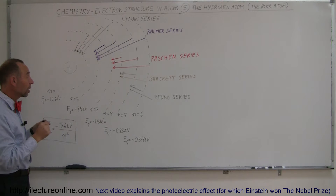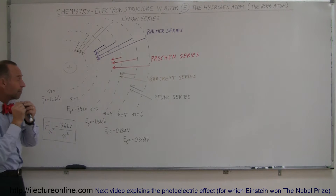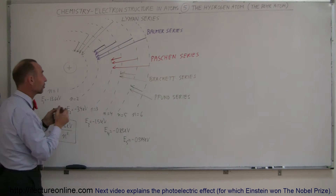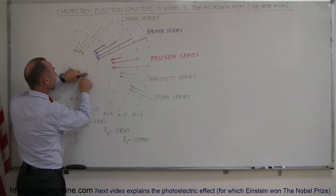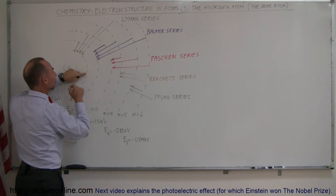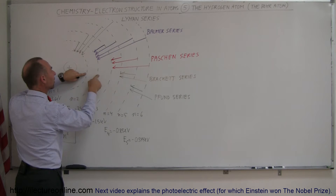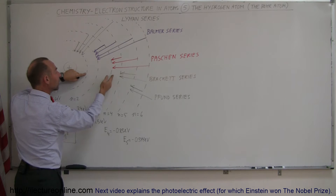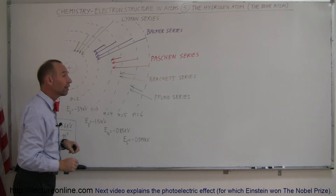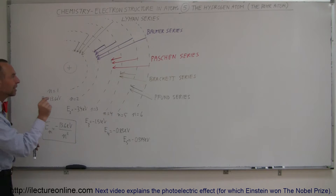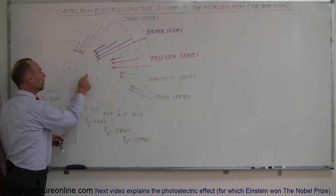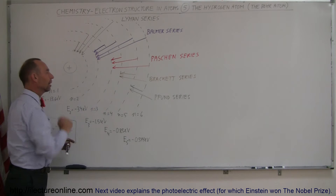If a photon came along that did not have the exact amount of energy — for example, if an electron was in the innermost level and the photon didn't have enough energy to make it to the next level — the electron would simply ignore it. Similarly, if the photon had enough energy to go one and a half levels but not quite to the next discrete level, the electron would again ignore it. It had to be the exact amount of energy needed to jump to another level.